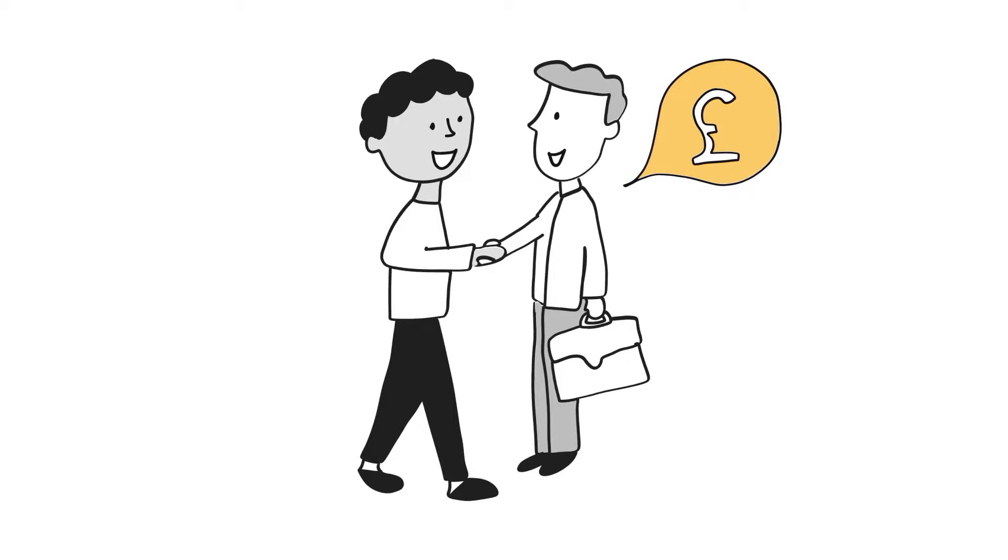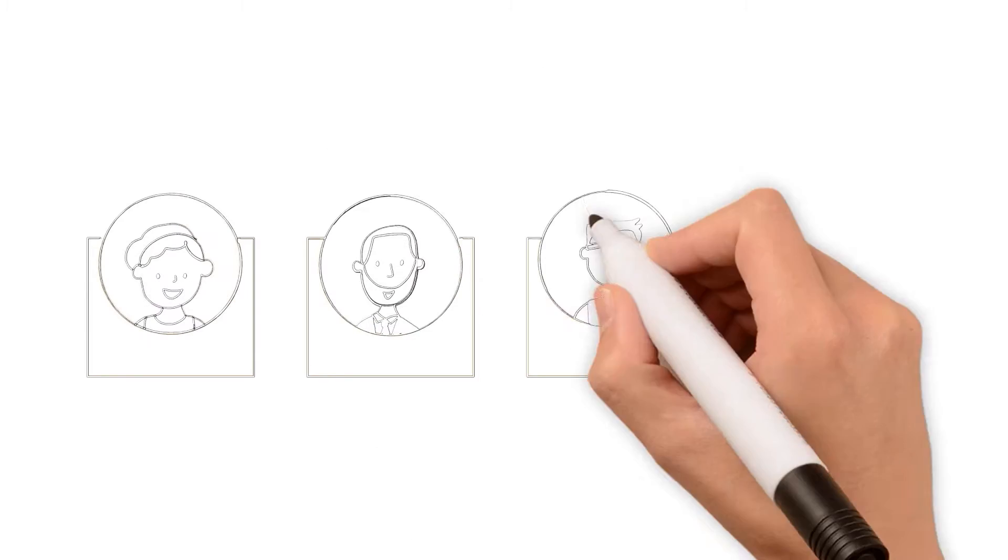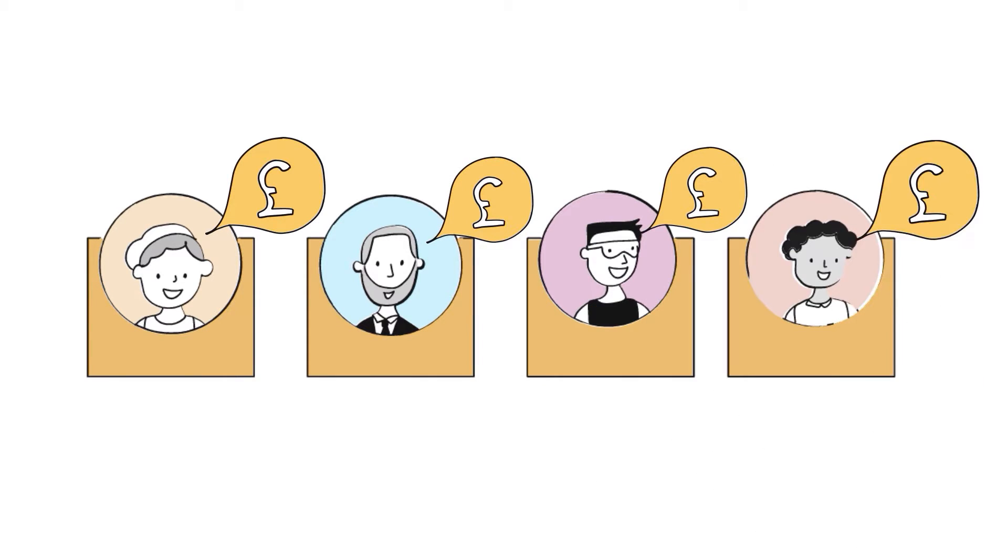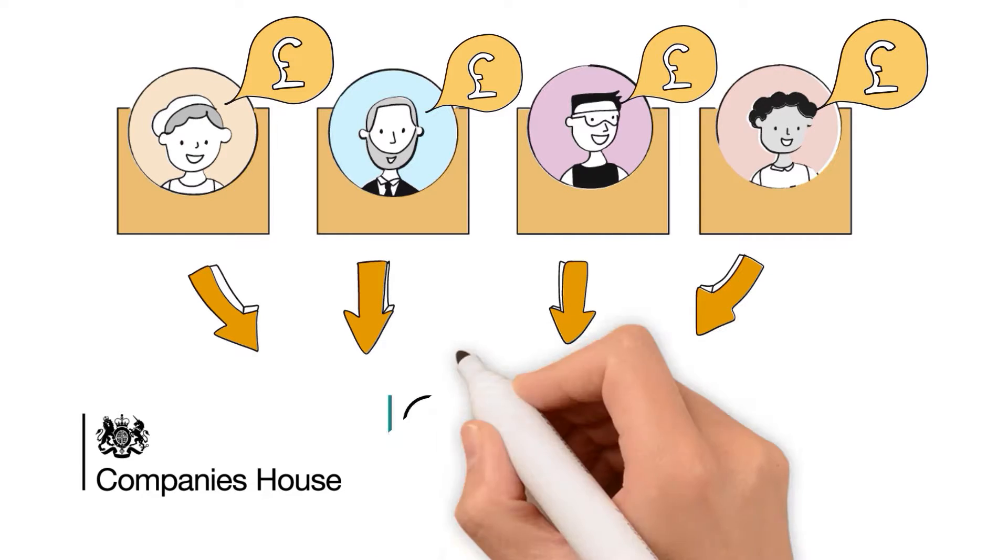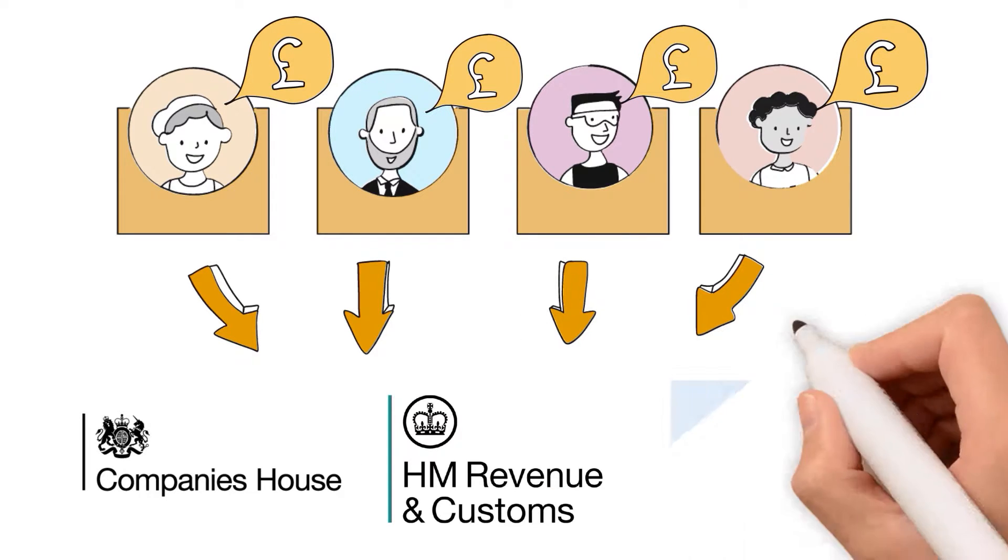You need to produce and provide financial statements and accounts. All businesses need to produce financial accounts for the regulators, for example Companies House, HMRC, Tax Office and the Charity Commission.